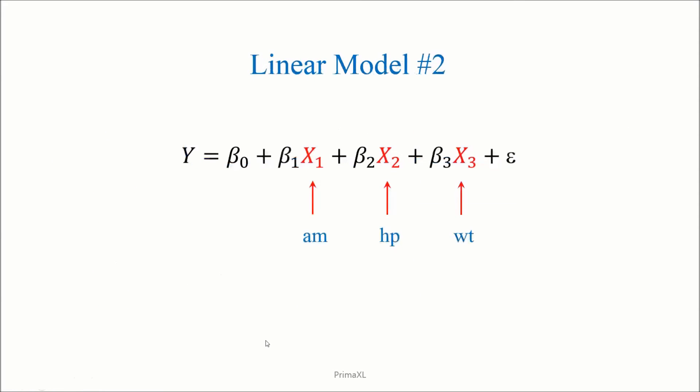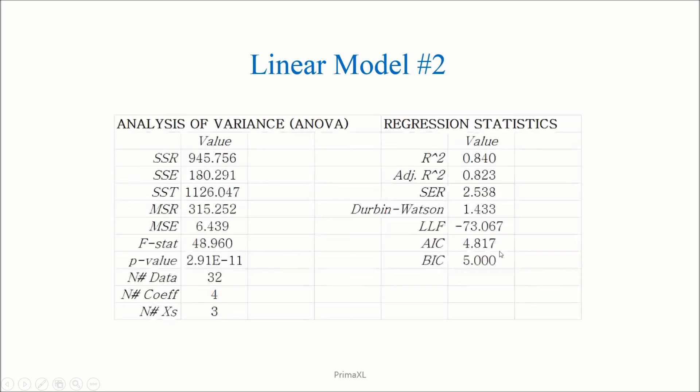Now, we move on. The second model is more complex. It has three independent variables: AM, HP, and WT. Again, AM is the variable that can be either 0 or 1 depending on the transmission type. HP is the horsepower and WT is the weight.